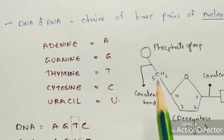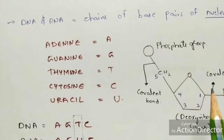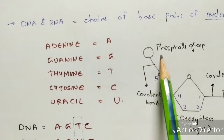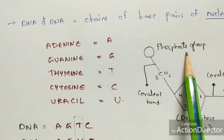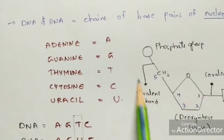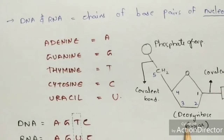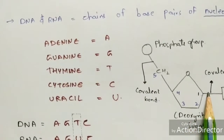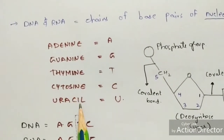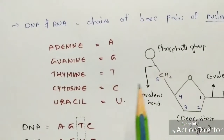This is how you determine the structure of DNA. The phosphate group is acidic in nature. Between the phosphate group and deoxyribose sugar, a covalent bond is present. Similarly, between the nitrogenous base and deoxyribose sugar, a covalent bond is also present.